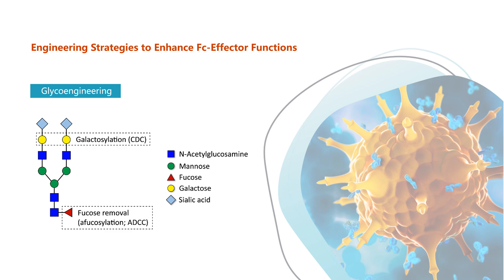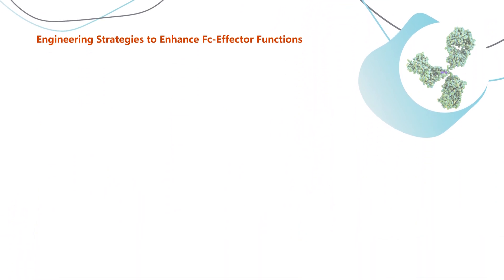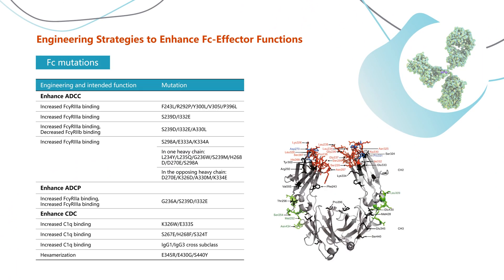Glycoengineering is an important strategy for the development of monoclonal antibody drugs with enhanced FC effector functions. For instance, afucosylation — the removal of fucose — results in higher ADCC activity, and galactosylation results in higher CDC activity. Introducing unique mutations in the FC region is another widely used FC engineering strategy. For example, mutation of serine at position 239 to aspartic acid will increase FC-gamma-R3A binding and decrease FC-gamma-R2B binding, resulting in enhancement of ADCC and ADCP.